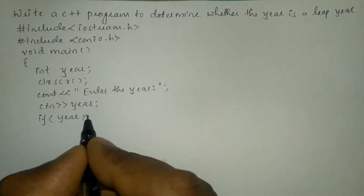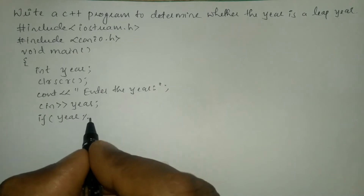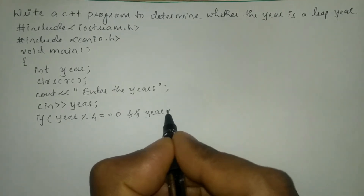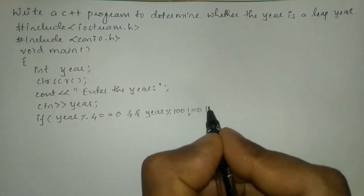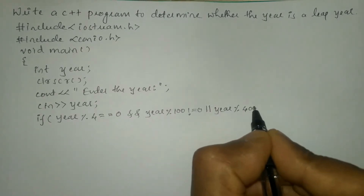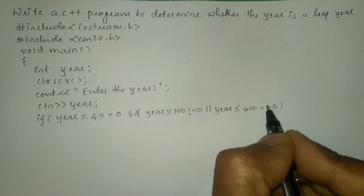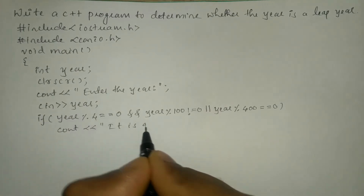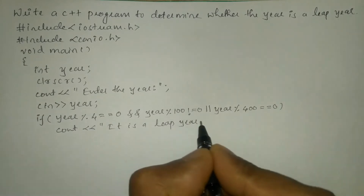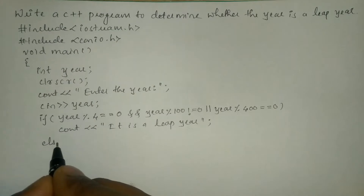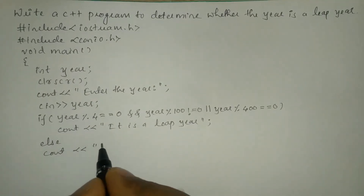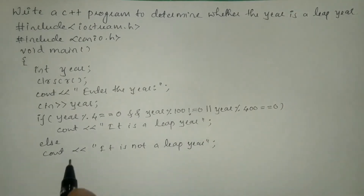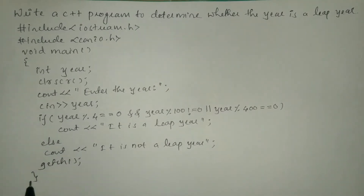Next we are going to check the condition just discussed. If year modulo 4 equals 0 AND year modulo 100 is not equal to 0, OR year modulo 400 equals 0, then such year is called a leap year — here we write cout 'It is a leap year'. If this condition is false, the else part executes: cout 'It is not a leap year', followed by the getch() function and the curly closing brace.